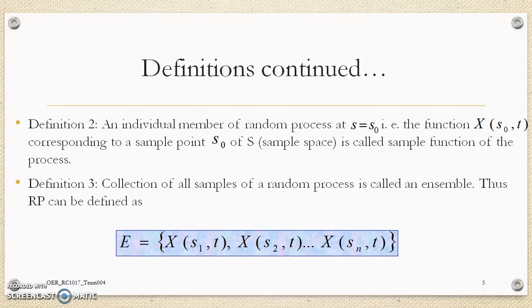Second definition: an individual member of random process at S equals S0, that is, the function X(S0,T) corresponding to a sample point S0 of S, is called a sample function of the process.